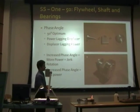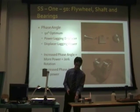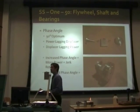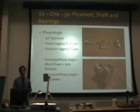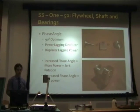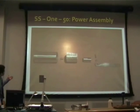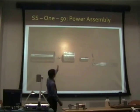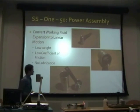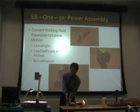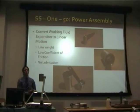The phase angle is a very important feature — the optimum phase angle is 90 degrees. By having the power piston lagging the displacer, or vice versa, I can direct which way the engine rotates. Increasing the phase angle increases power output, but around 100 to 120 degrees we get jerk rotation, which is unsuitable for electricity generation. Decreasing it produces less power. The power assembly consists of a power cylinder, power piston, clevis, and crankshaft — converting the working fluid's expansion to linear motion, then to rotational motion via the flywheel. It's designed to be low weight, with a low coefficient of friction and no lubrication required.